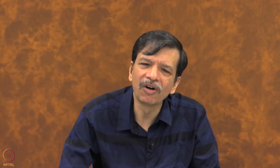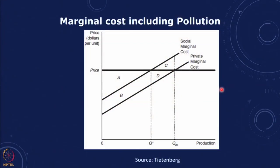In many cases when we talk about externality, we look at marginal cost. We have a private marginal cost, which does not account for the adverse impact on society. If we add to that the marginal cost of pollution, we get another curve showing the social marginal cost. This was the externality caused by the production function — now let us think about externality caused by the utility or consumption function.